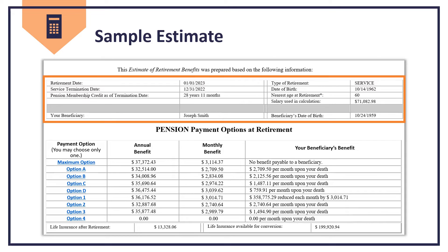Your estimate will be produced using the information you provided. The top of the estimate provides the factors used in the calculation of your retirement, including your retirement date and type of retirement, the service termination date, your total service credit as of your termination date, your date of birth, age at retirement, salary used to calculate your pension, and your beneficiary's name and date of birth.